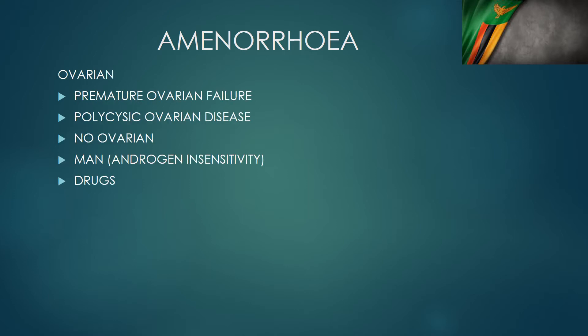Amenorrhea can also be ovarian in origin. You can have what is called premature menopause, which is the ovarian tissue or the ovary shutting down before the age of 40. There's also what is called early menopause when ovarian function ceases by the age of 45. That can be due to many factors — it can also be somebody who has had radiation or chemotherapy administered to them, and their ovary just stops functioning, causing amenorrhea. We also have ovarian dysfunction from polycystic ovarian disease. Sometimes a woman might have no ovaries at all. An example here is Turner syndrome, where a woman whose genetics are XO instead of XX — her ovaries are not well developed; they are streak gonads, as they are usually described.